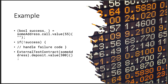They give an example: `boolean success` — check for that value. If not success, handle the failure code. If successful, go ahead and deposit 300. Check that value and make sure you get those values back.